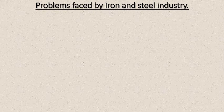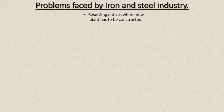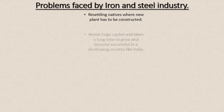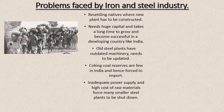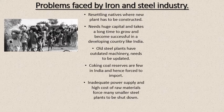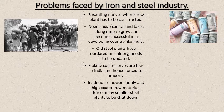Like cotton and sugar industries, the iron and steel industry also has problems. First: resettling natives where a new plant is constructed. Imagine the size of Visakhapatnam steel plant — 33,000 acres — so many people would have been living there and had to be shifted, which is very difficult. Second: it needs huge capital and takes a long time to grow. An iron and steel industry will not grow immediately; it can take 10, 15, 20, or even 50 years to fully develop, especially in a developing country like ours.